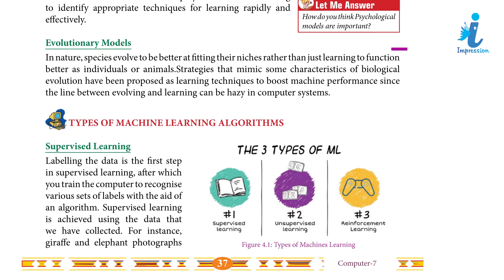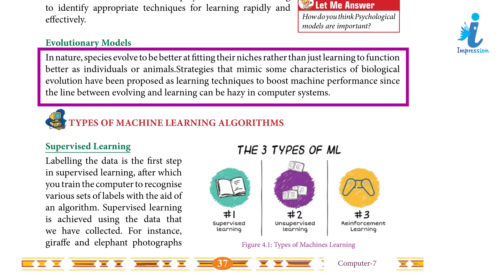Evolutionary models: In nature, species evolved to be better at fitting their niche rather than just learning to function better as individuals or animals. Strategies that mimic some characteristics of biological evolution have been proposed as learning techniques to boost machine performance, since the line between evolving and learning can be blurred in computer systems.